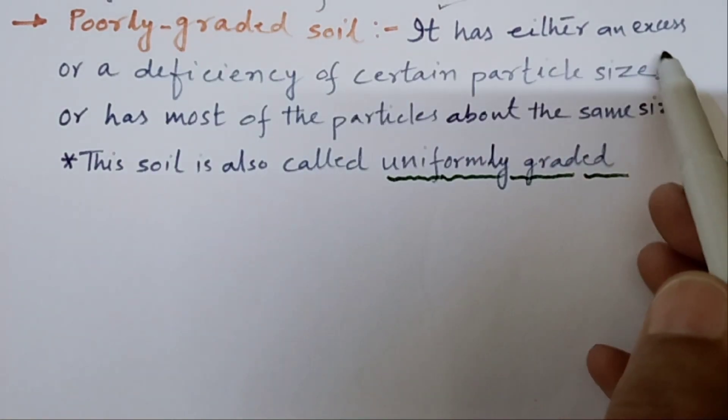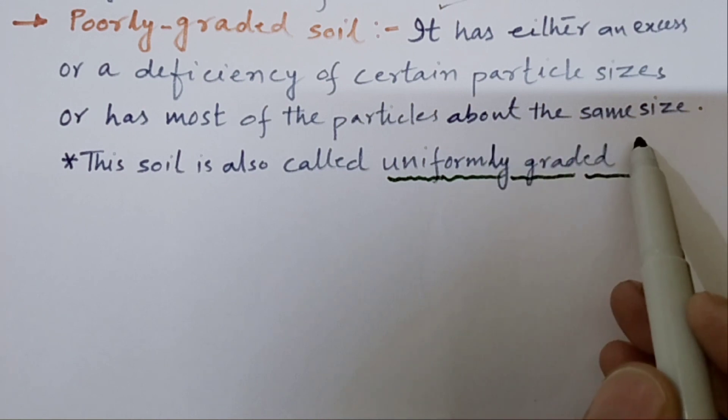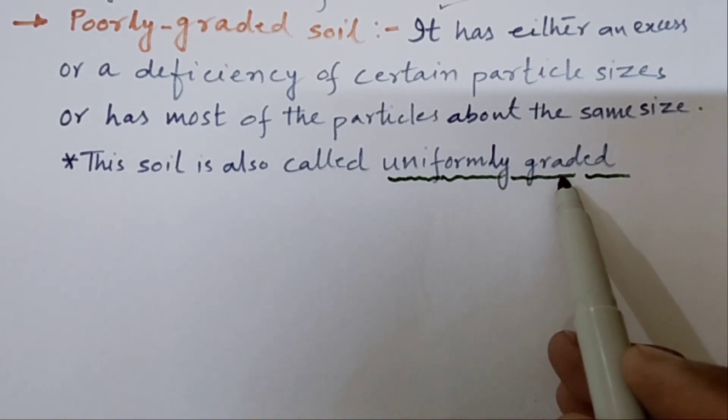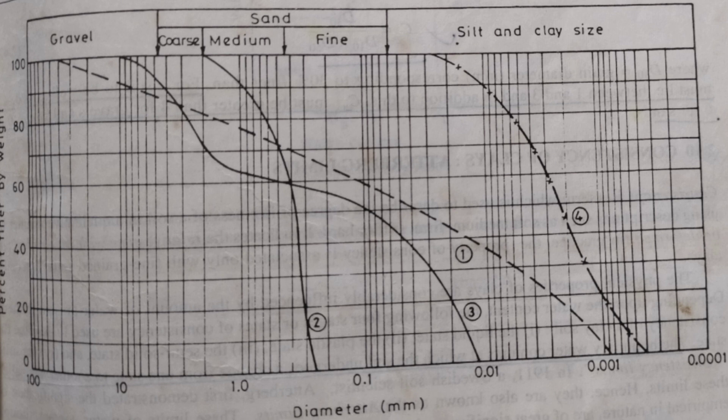Poorly graded soil has either an excess or deficiency of certain particle sizes or has most of the particles about the same size. This soil is also called uniformly graded. Here in the curve we can see curve number 1 represents a well graded soil with particles ranging from gravel to fines. And curve number 2 and 3 are poorly graded. So this is all about sieve analysis.